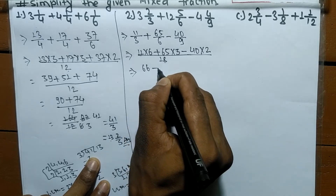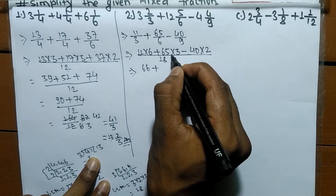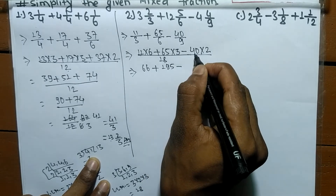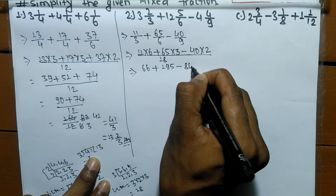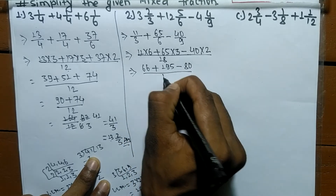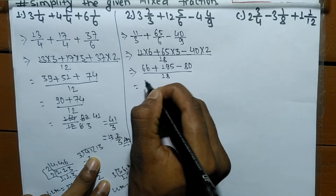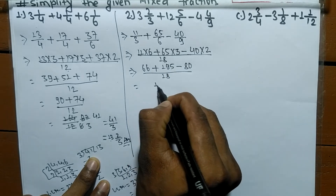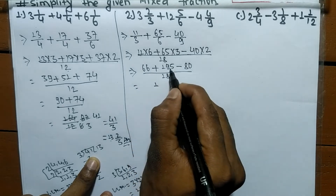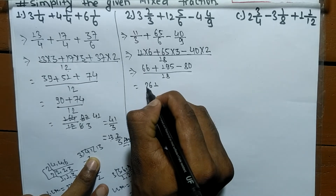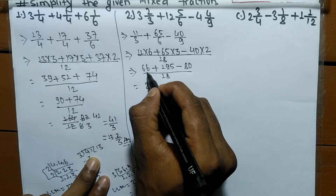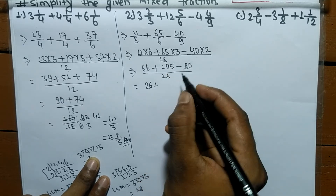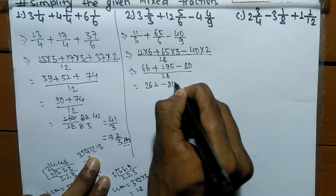So now 11 times 6 means 66, plus 65 times 3 means 195, minus 40 times 2 means 80, all by 18. Now we add 66 and 195: 6 plus 5 means 11, carry 1; 6 plus 9 means 15 plus 1 means 16, carry 1; 1 plus 1 means 2. So 66 plus 195 gives us 261.